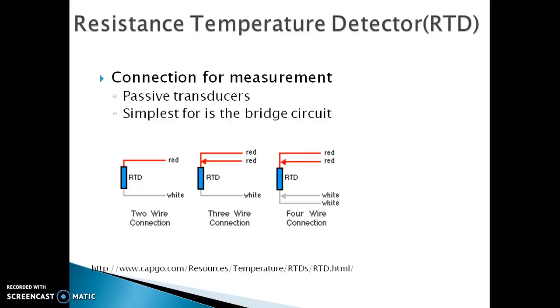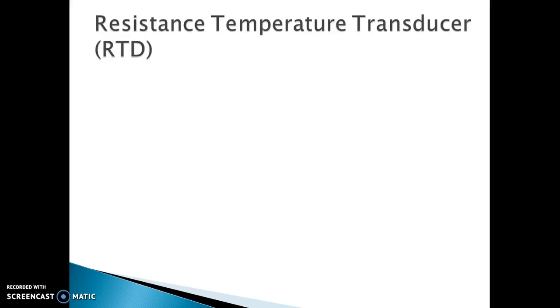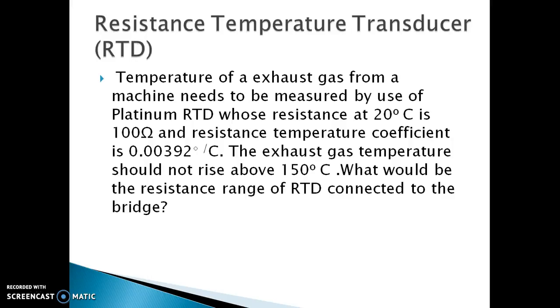Now that we have understood the working principle and construction of RTD, let's see if you can help with the next problem. We need to measure a temperature of an exhaust gas from a machine by use of platinum RTD whose resistance at 20 degree Celsius is 100 Ohm and resistance temperature coefficient is as given.